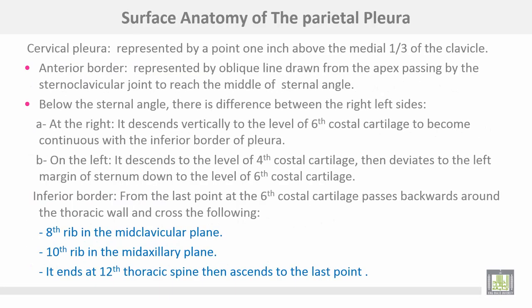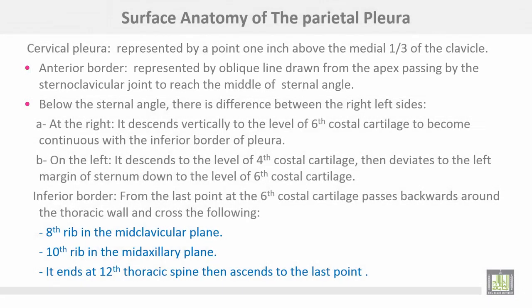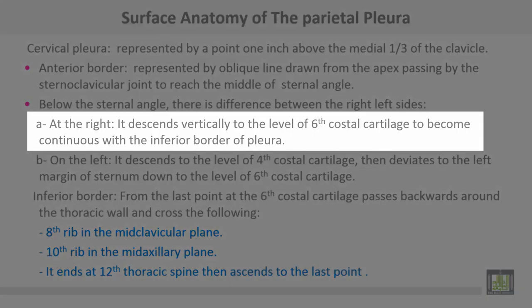The surface anatomy of the pleura: the cervical part is represented by a point one inch above the medial third of the clavicle. The anterior border is represented by an oblique line drawn from the apex, passing by the sternoclavicular joint, to reach the middle of the sternal angle. Below the sternal angle, there is a difference between right and left sides. On the right side, it descends vertically to the level of the 6th costal cartilage to become continuous with the inferior border of the pleura.